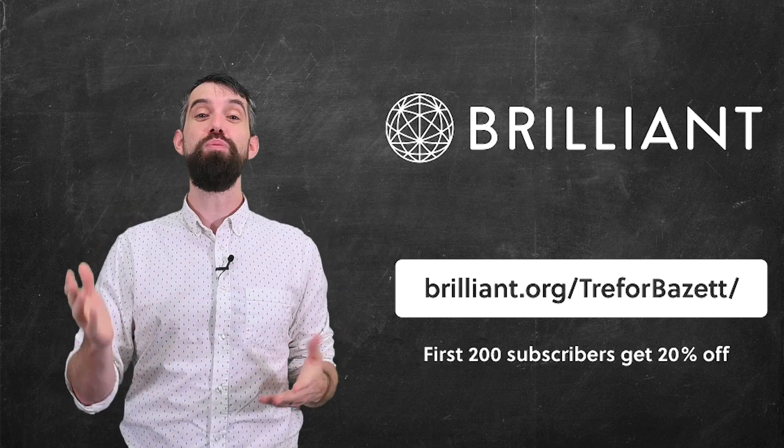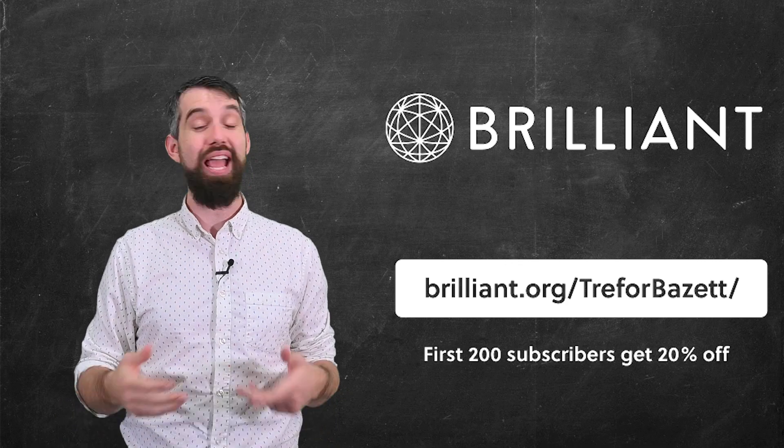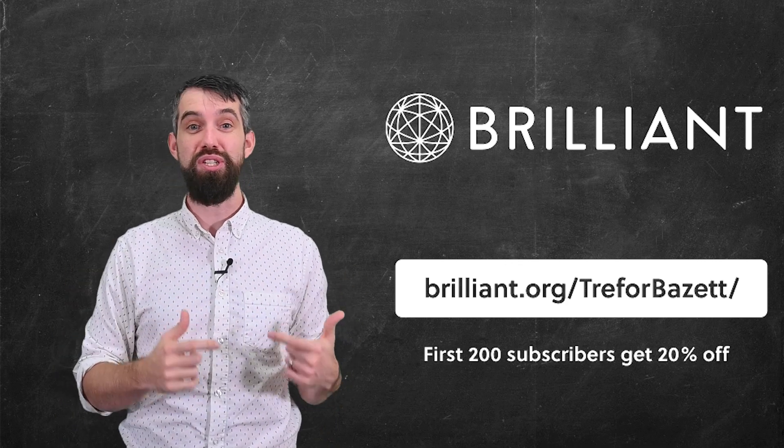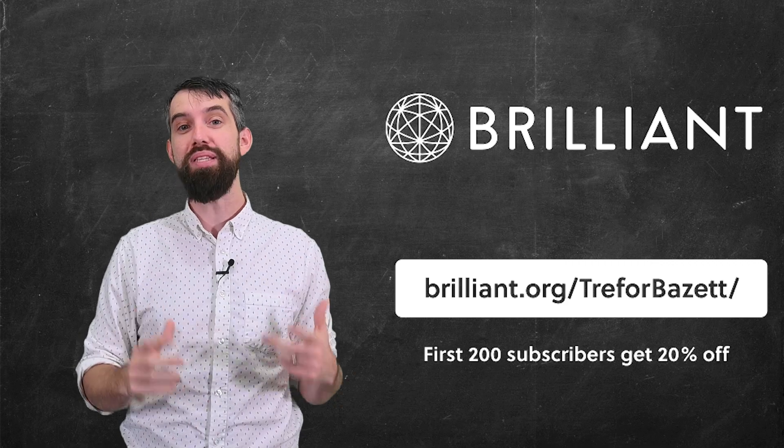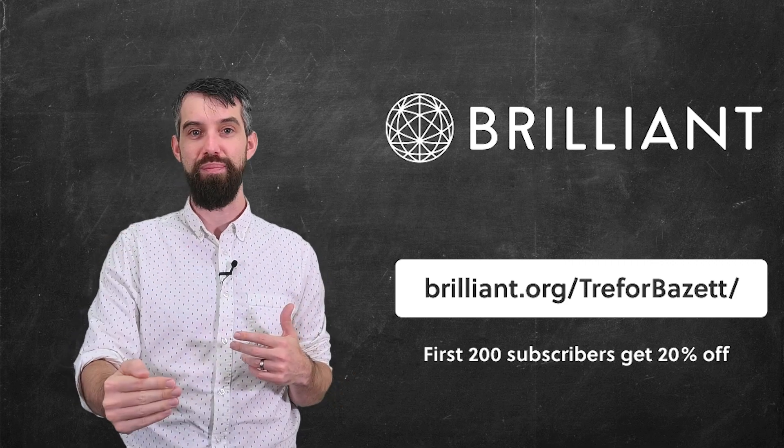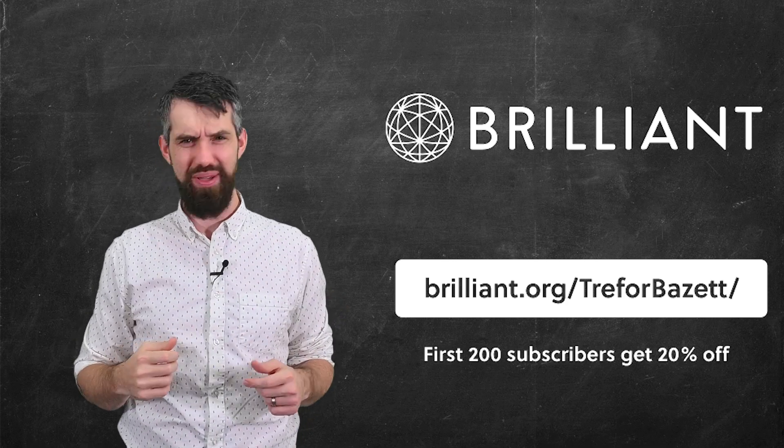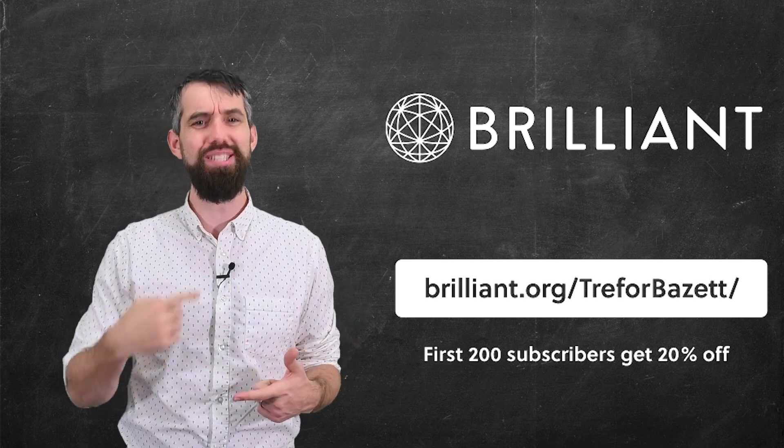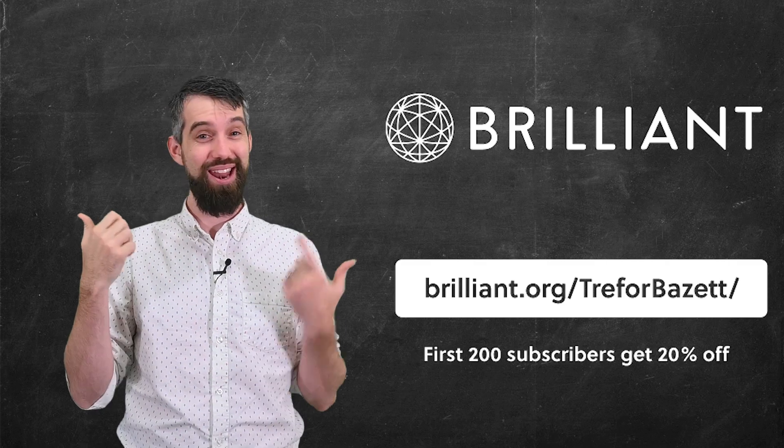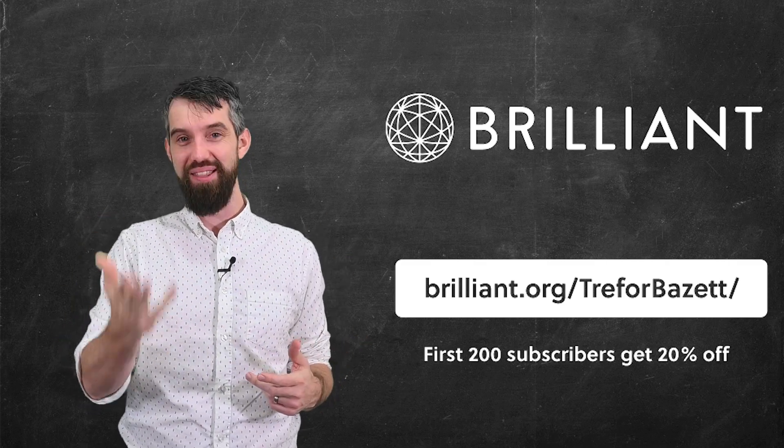So go to brilliant.org/TreforBazett and sign up for free, or the first 200 subscribers to follow that link will get 20% off the annual premium subscription. And with that said, I hope you enjoyed the video. Do give it a like for the YouTube algorithm because YouTube likes algorithms just as much as you and I and Brilliant do. And with that, we'll do some more math in the next video.